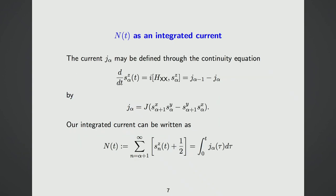One small remark: even though we defined N(T) using operators or probability distributions, it can be considered as an integrated current. Using the Schrödinger equation one can write the time evolution of the operator S_alpha^Z, which gives an instantaneous current operator J_alpha, and then the integrated current equals the time integral of this instantaneous current.